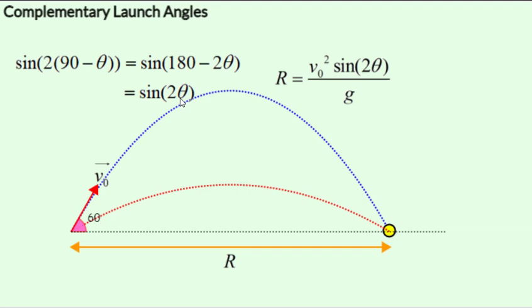Which means that if we launch a projectile at an angle of theta or at an angle of 90 minus theta, we would get the same range.